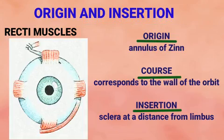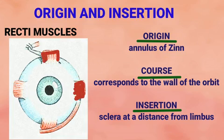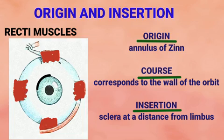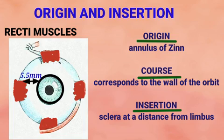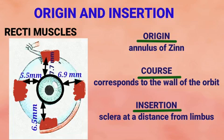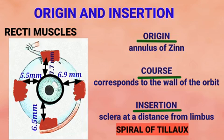All these muscles finally get inserted into the sclera but at different distances from the limbus — the junction between the sclera and cornea, i.e., the sclerocorneal junction. The medial rectus is inserted about 5.5 mm from the limbus, inferior rectus about 6.5 mm, lateral rectus 6.9 mm, and superior rectus about 7.7 mm. The insertion of the 4 recti muscles around the limbus forms a spiral called the spiral of Tillaux.